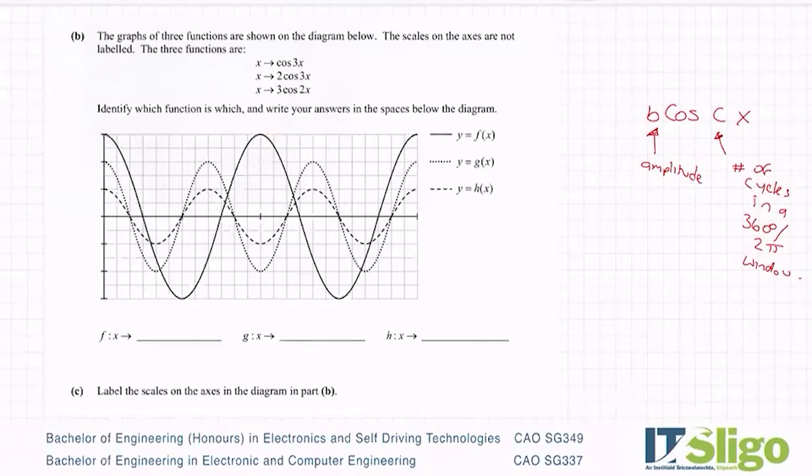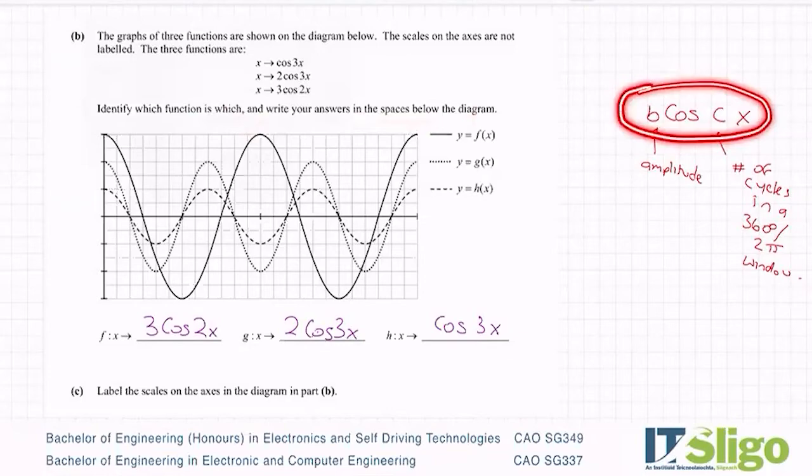Let's try and label them now. That first one looks like the bottom one, so h(x) is cos(3x). The fully dark one is f(x), which is the big one, so 3cos(2x). And g(x) then is the smaller dashed line. So we've identified which function is which and written our answers in the spaces below. All coming from the general form of a trig function.